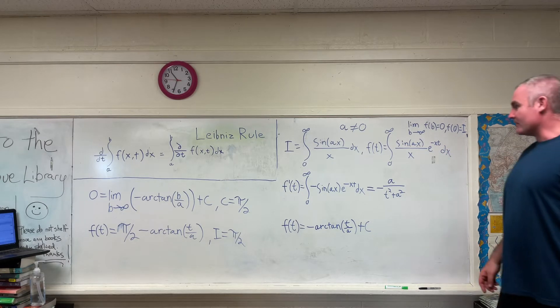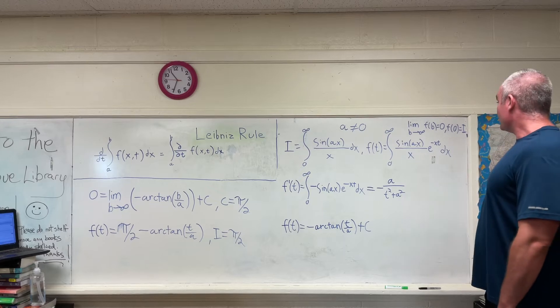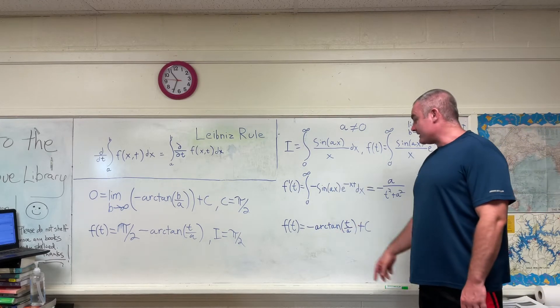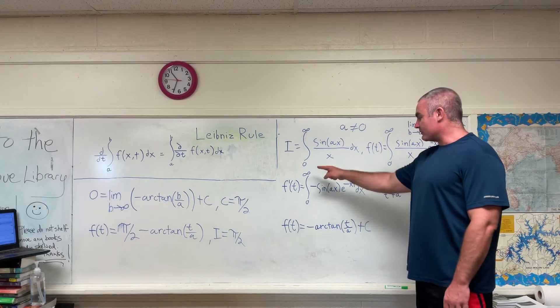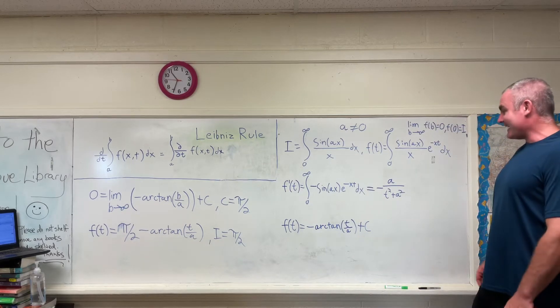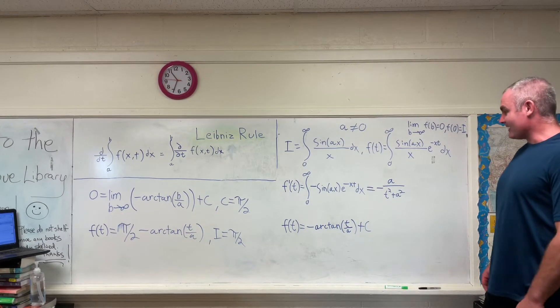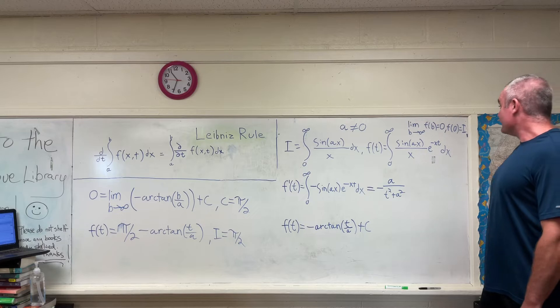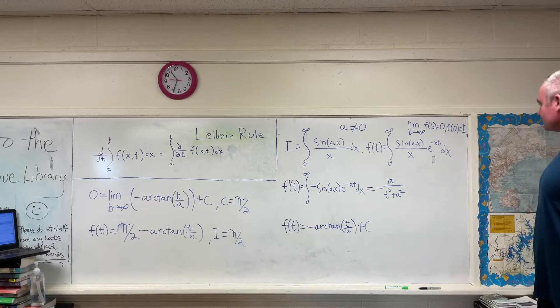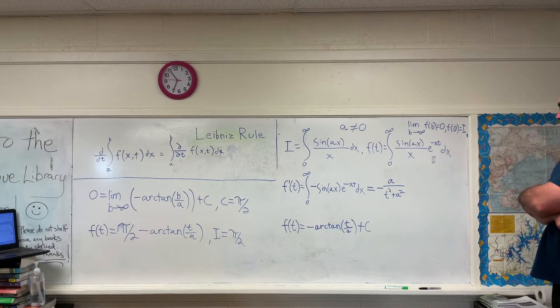Using the Leibniz rule for differentiation under the integral sign, we get that f prime of t is equal to the integral from zero to infinity of negative sine of ax times e to the negative xt dx. That step's pretty easy to see.